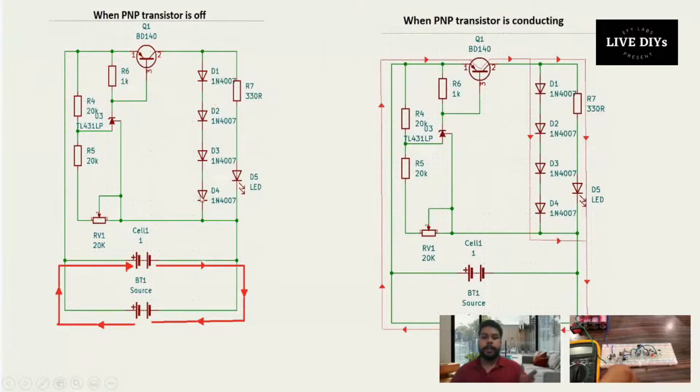These will act as a load. When we don't want the cell to charge or when the cell is overcharged, the current will pass through these diodes and it will basically waste the current, waste the energy, but will protect the circuit and protect the cell.